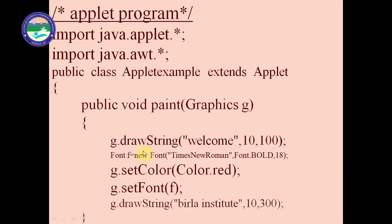This is the welcome string. In the second statement we are setting the font. We have taken an object f of the Font class. Inside the Applet package we have different classes, and Font is one of them. So its object is: f = new Font and we mention 'Times New Roman', Font.BOLD - we can also write Font.ITALIC - and size 18. At g.setColor we are setting the color - we can write Color.green, Color.yellow, or a color code in place of Color.red.